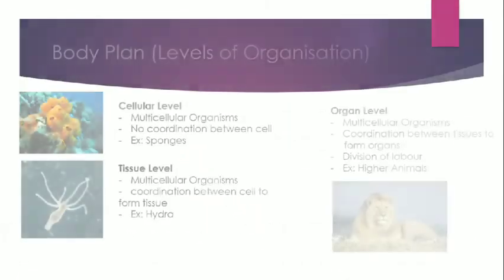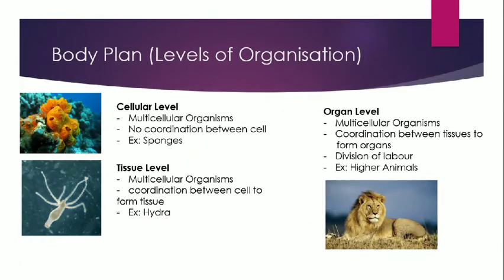The second parameter is body plane, which includes levels of organization. Animals are further classified into three levels: cellular level, tissue level, and organ level. At the cellular level, found in multicellular organisms, no coordination takes place between the cells — every cell performs individual functions like respiration, exchange of gases, and excretion independently, without coordinating with each other. The best example of cellular level is sponges.